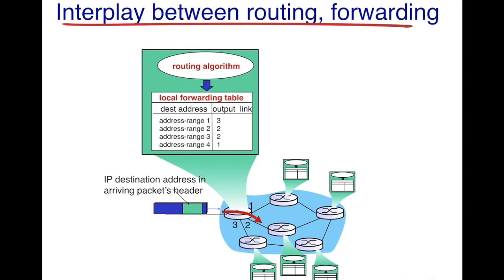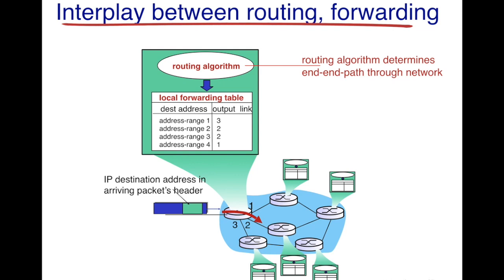So what does the routing algorithm do? The routing algorithm determines the end-to-end path through the network — that is, how to reach from this particular node to any other node in the network. Once the routing algorithm executes at a node, it populates the local forwarding table at that node.